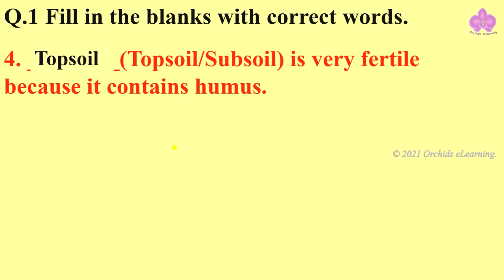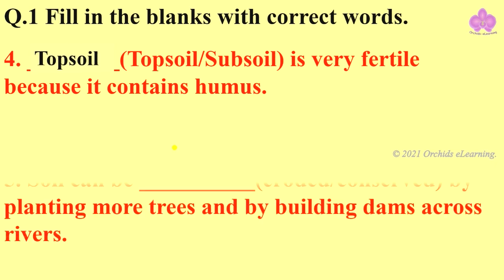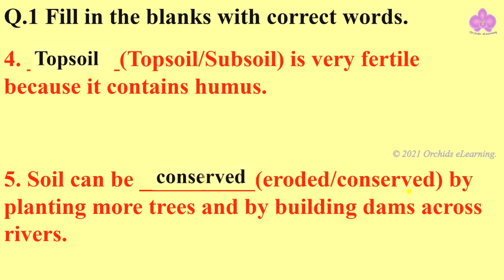Coming to the fifth one: soil can be blank by planting more trees and by building dams across rivers. Options are eroded or conserved. And the answer is conserved.